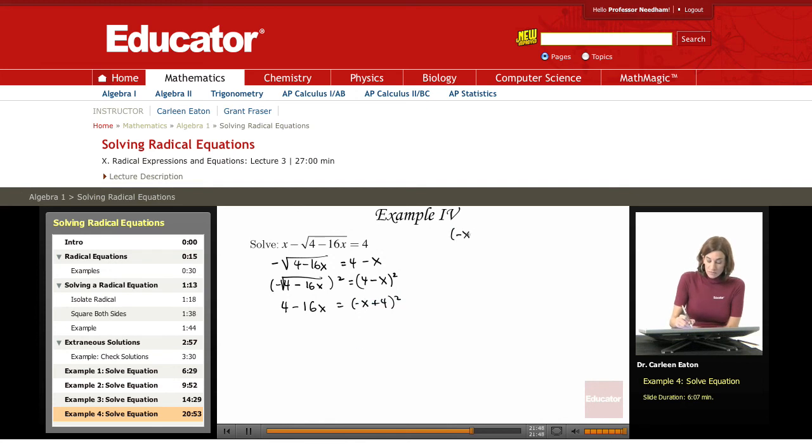If you multiply that out, there's a couple ways you can do this, but let's go ahead and multiply it out using FOIL. First terms, negative x squared is x squared. Outer is minus 4x.